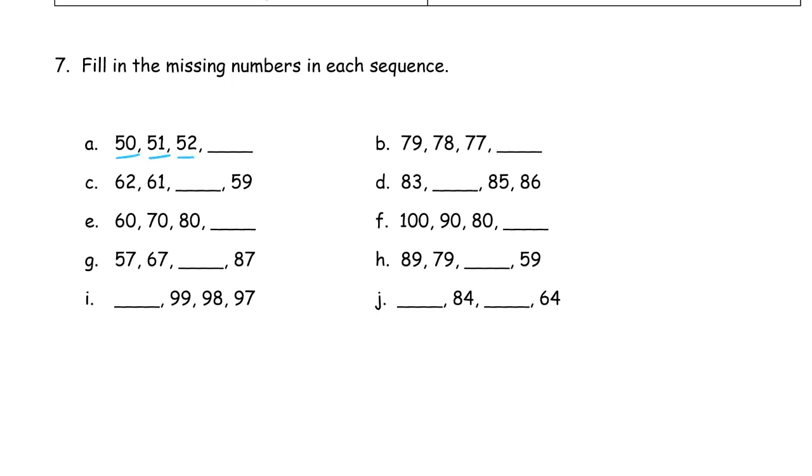And here, 62, 61. Well, let's go across and do B next. Okay, we're going to do this one next. So 79, 78, 77. They're getting smaller. So, and they're getting smaller by 1's because we're in the 70's all three times here. So 76.